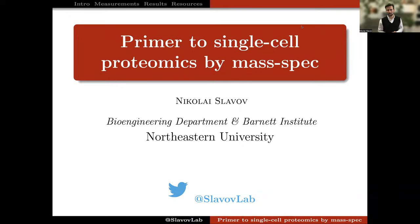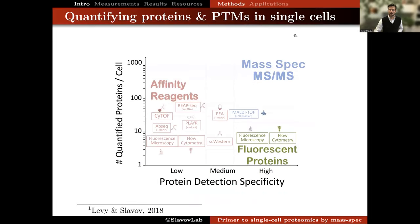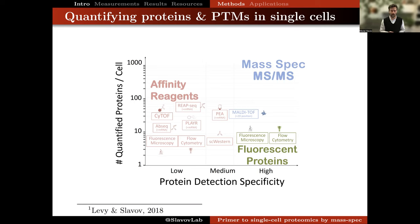Welcome to this primer on single-cell protein analysis by mass spectrometry. Why should we try to do this analysis? Why shouldn't we use some of the established technologies for measuring proteins in single cells, such as those relying on affinity reagents?